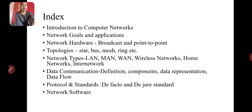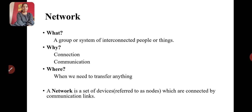Now let us see what is meant by network. A network is a group or system of interconnected people or things. Interconnected means when two devices are capable of exchanging something, then they are interconnected.